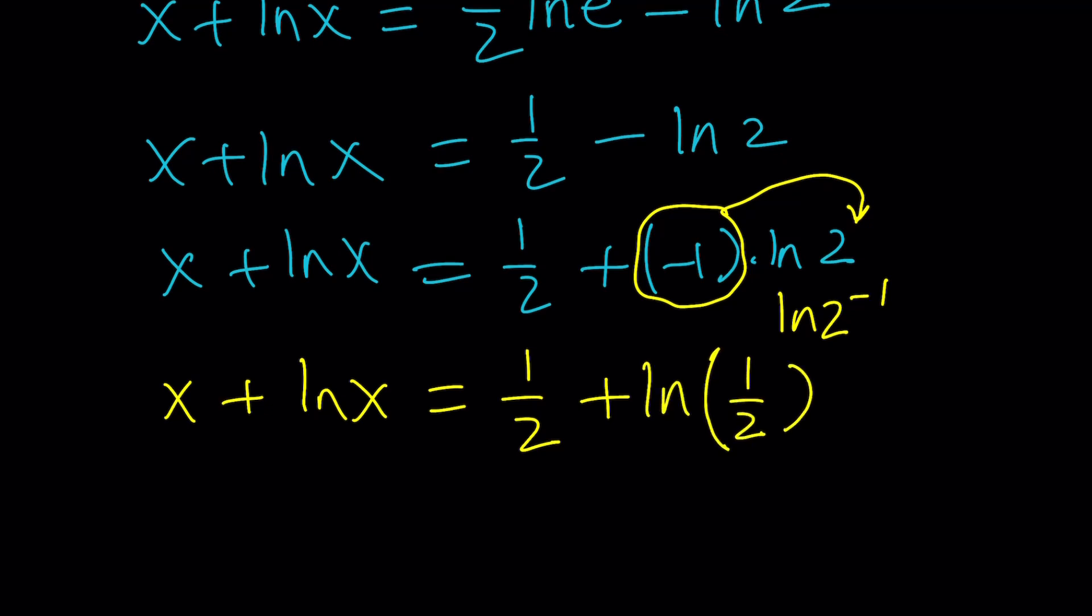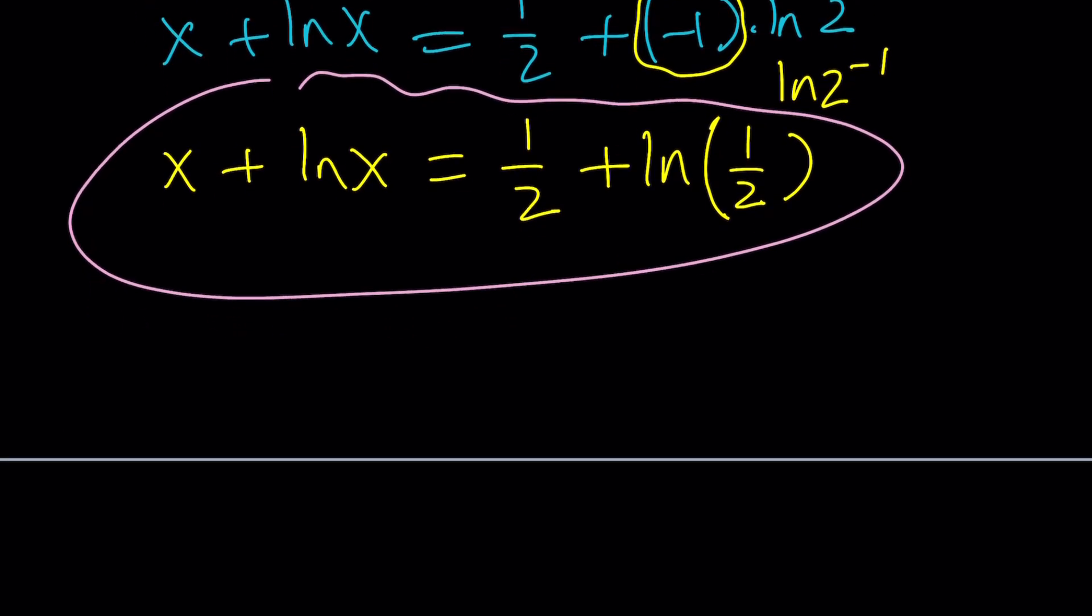And this is just awesome don't you think? Because now we have a one-to-one correspondence. Take a look at this. Notice that x equals one-half works, right? So x equals one-half is a solution. I'm not saying that's the only solution and that's actually the question that I'm going to raise here. Are there any other solutions?